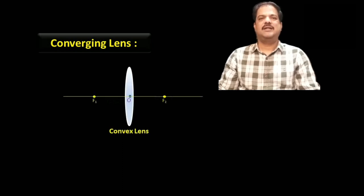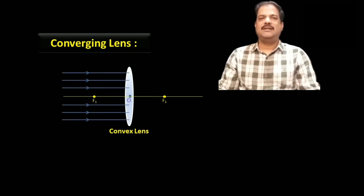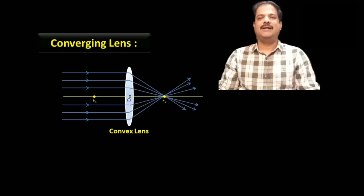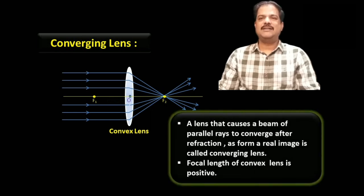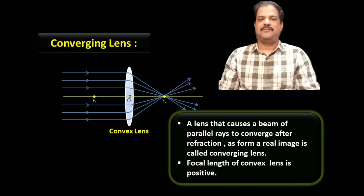Convex lens is known as a converging lens. F1 and F2 are the focuses of the convex lens. Rays coming from the object are parallel to the principal axis — this is a parallel beam of light rays. After refraction, all these refracted rays meet at a point at the focus. This process is known as convergence of light rays, so convex lens is known as a converging lens. A lens that causes a beam of parallel rays to converge after refraction and form a real image is called a converging lens. The focal length of a convex lens is positive.